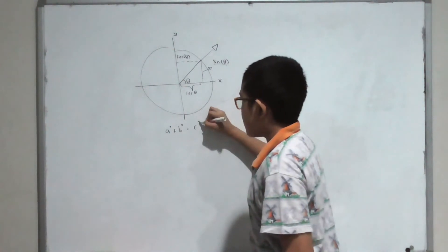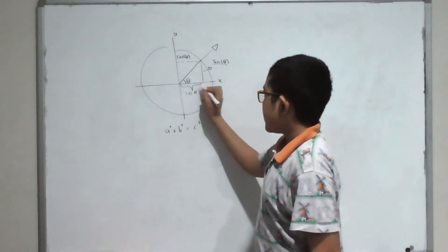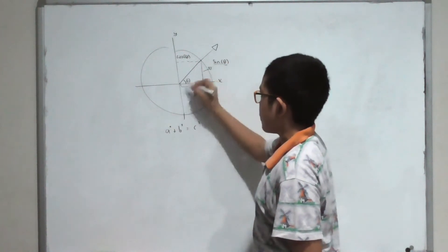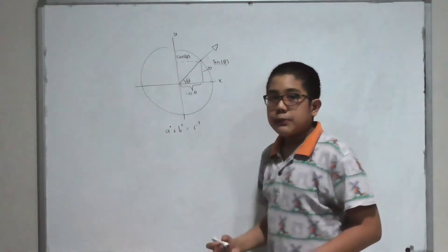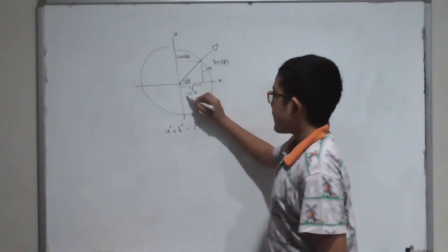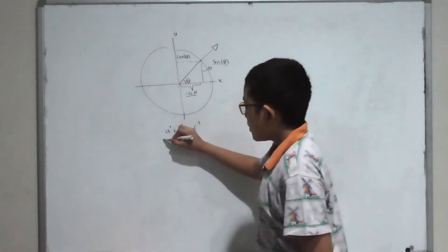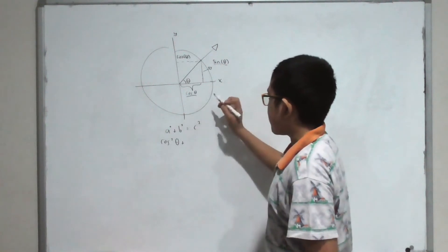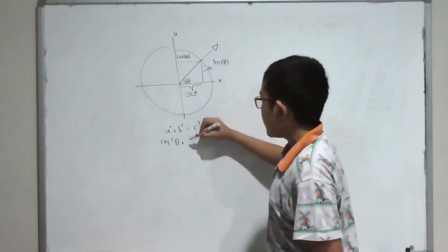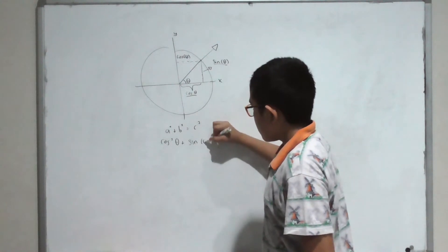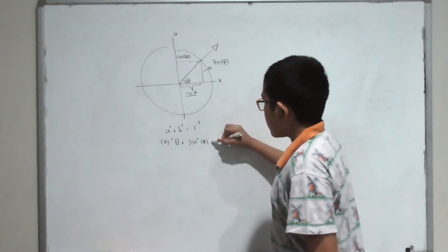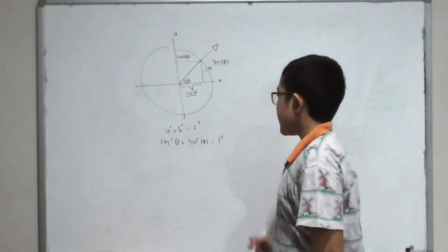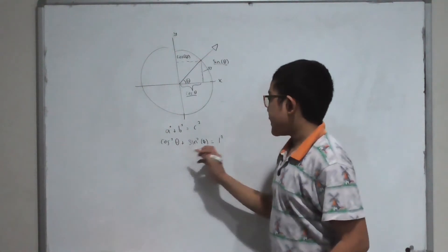How do we algebraically express that? We know the Pythagorean theorem: a squared plus b squared equals c squared — the base squared plus the height squared equals the hypotenuse squared. Inputting our values: cosine of theta is the base, so cosine squared of theta, plus sine squared of theta for the height, equals one squared for the hypotenuse.